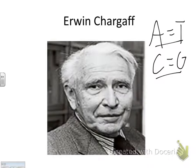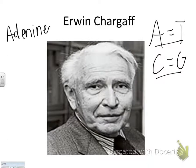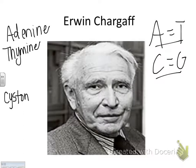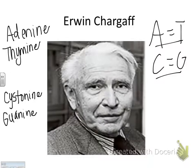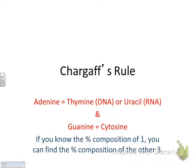Write out on the side: A is adenine, T is thymine, C is cytosine, and G is guanine. If there's 32% adenine, then there's exactly 32% thymine — the percentages match up. A pairs with T in DNA, and A pairs with U in RNA. C pairs with G in both DNA and RNA.